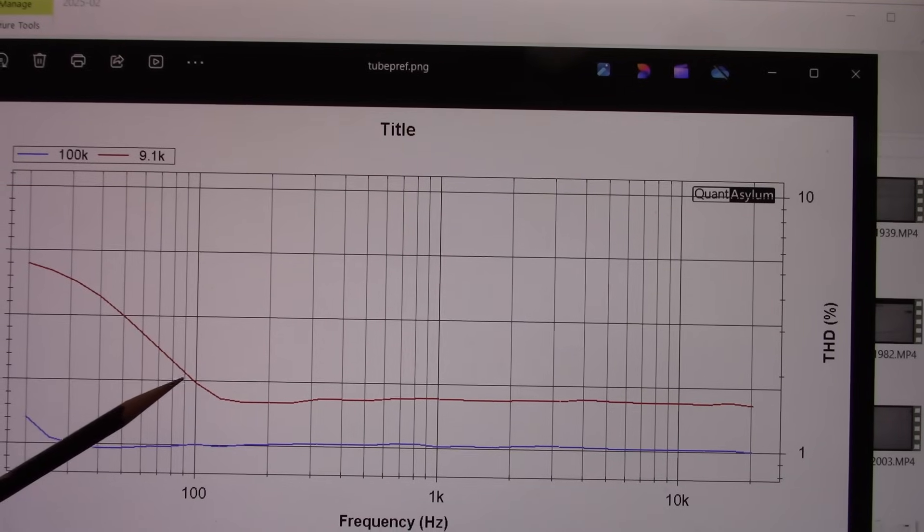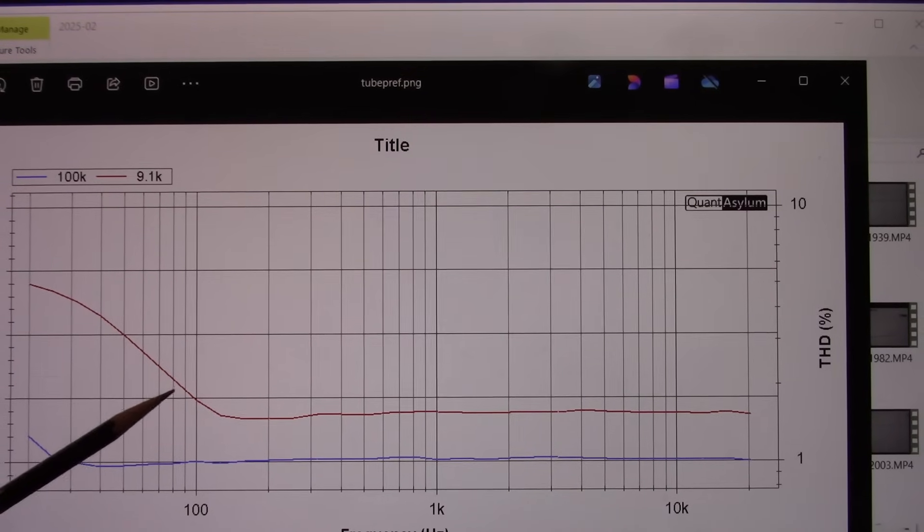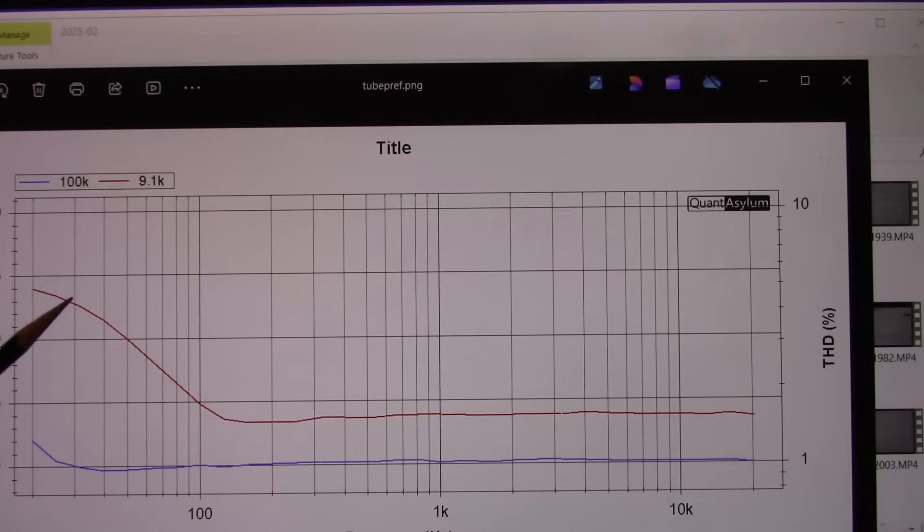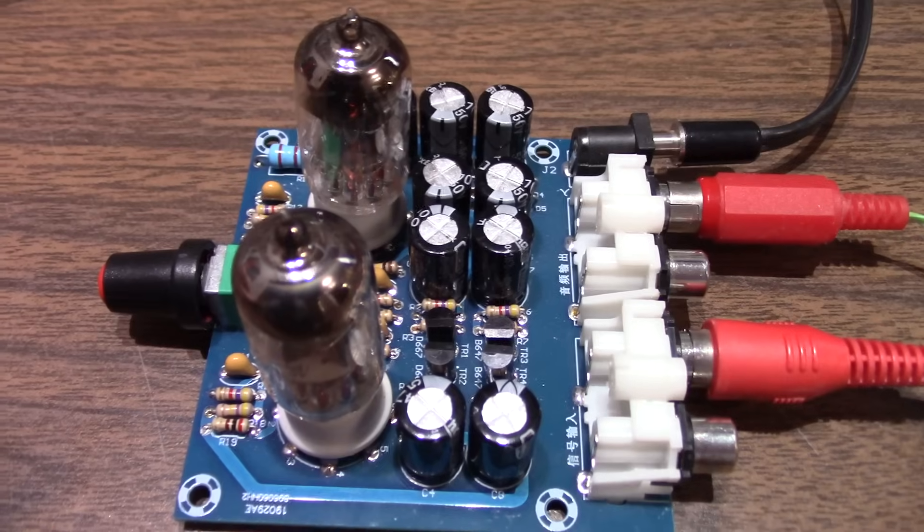As you pass through the pole frequency of the circuit, the voltage across the capacitor plates get larger. And apparently, there's some non-linearity. Because at 20 hertz, we're getting up to 5%.